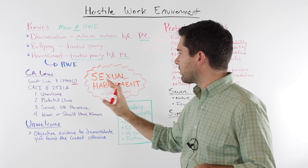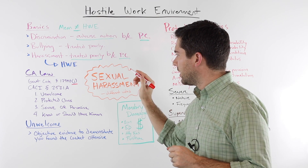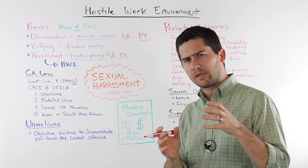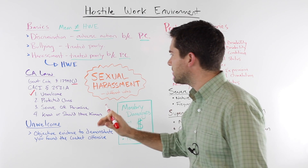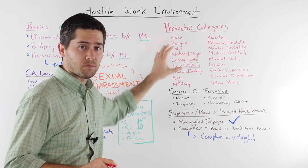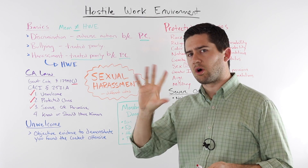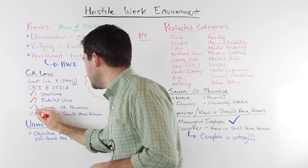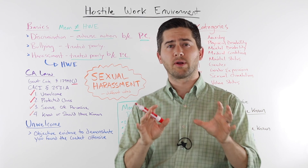That law is further refined and better explained in the jury instructions — section 2521, subsection A. The four main elements are as follows. First, the harassing conduct or comments must be unwelcome. Second, it must be because of a protected class or category. Third, the harassment must be so severe or pervasive as to alter the working conditions and create an abusive working environment. Finally, you have to show that the company knew or should have known that the harassment was occurring, in order to hold the employer liable.